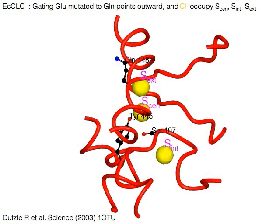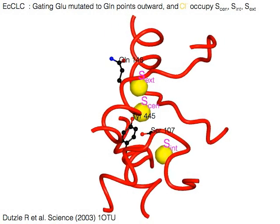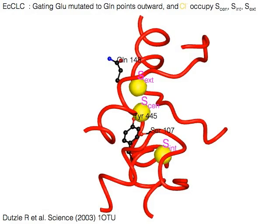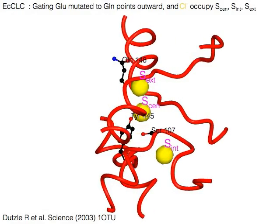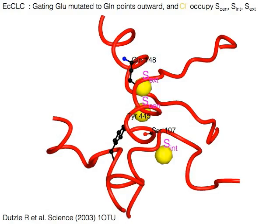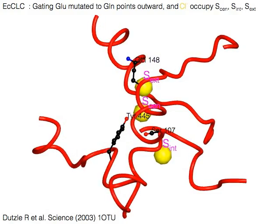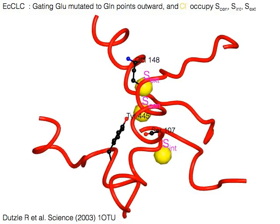In this structure of E. coli CLC, the gating glutamate is mutated to glutamine to mimic protonated, neutral glutamate. The glutamine is pointing outward, and all three sites are occupied by chloride ions.